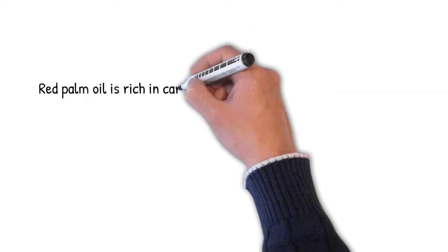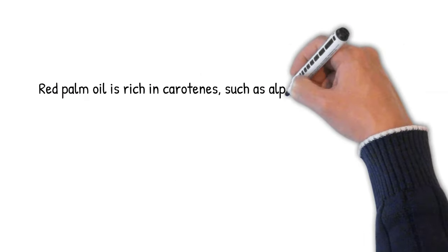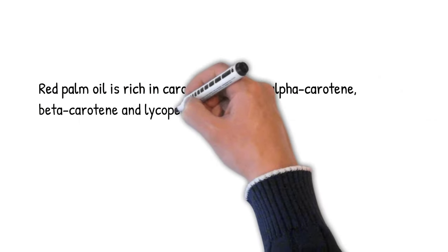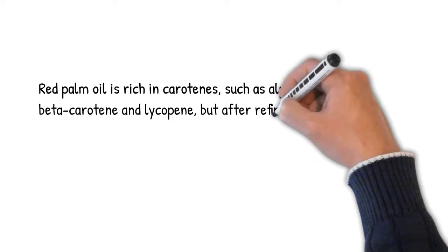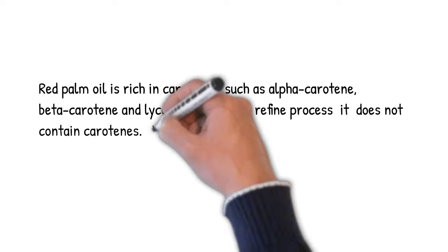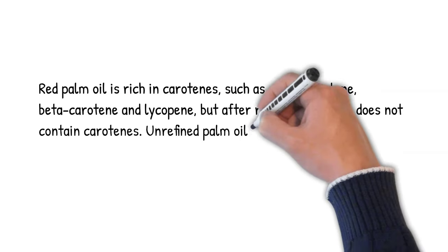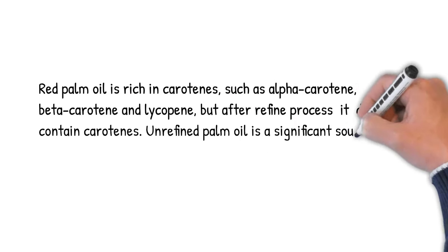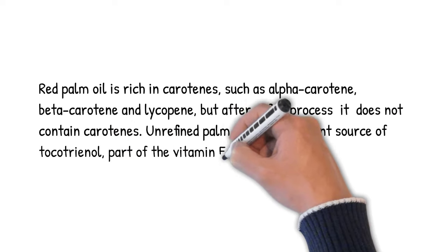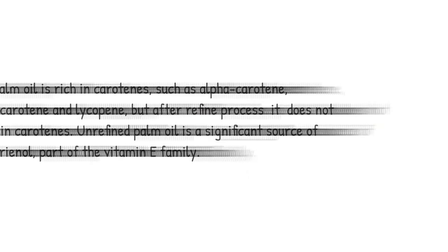Red palm oil is rich in carotenes such as alpha-carotene, beta-carotene, and lycopene, but after the refining process it does not contain carotenes. Unrefined palm oil is a significant source of tocotrienol, part of the vitamin E family.